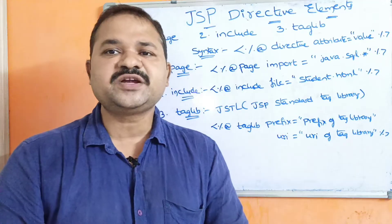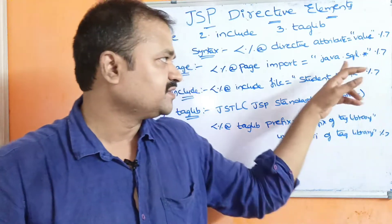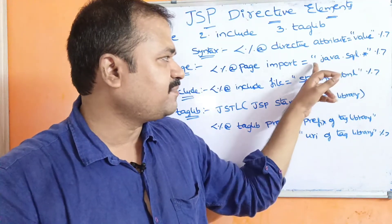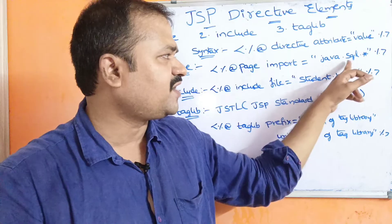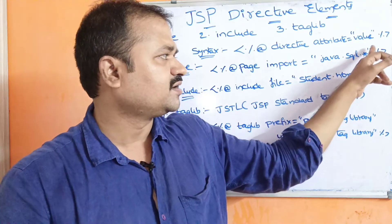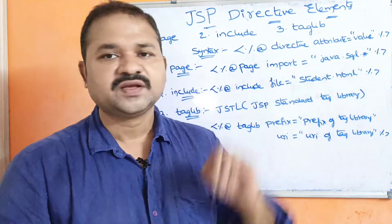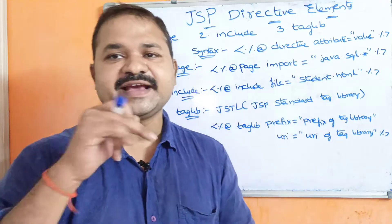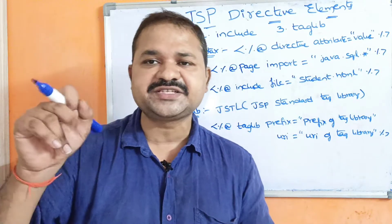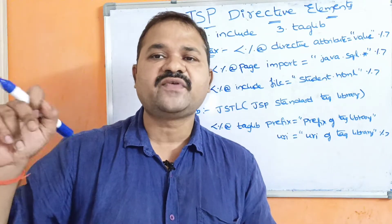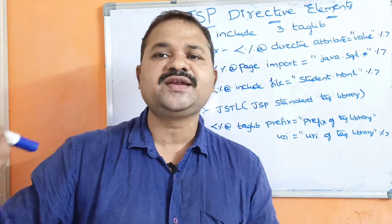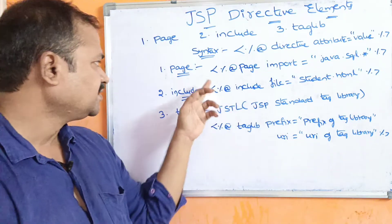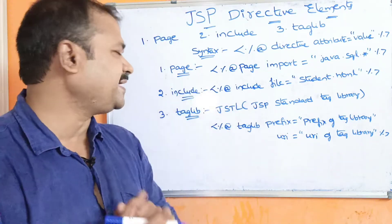If we want to import the IO package, we write import equals java.io.* within double quotations. If we want to import the util package, we write import equals java.util.* within double quotations. So this is about page directive.